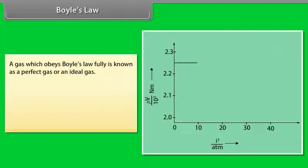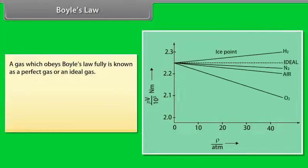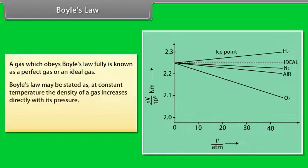A gas which obeys Boyle's law fully is known as perfect gas or an ideal gas. Boyle's law may be stated as at constant temperature, the density of a gas increases directly with its pressure. P over rho is equal to constant.